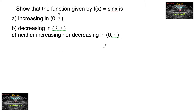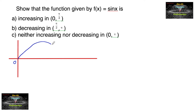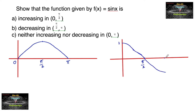Before solving this, let us look at the graph of sin x and cos x on (0, π). From the graph it is very clear that on (0, π/2) it is increasing, on (π/2, π) it is decreasing, and on (0, π) it is neither increasing nor decreasing.